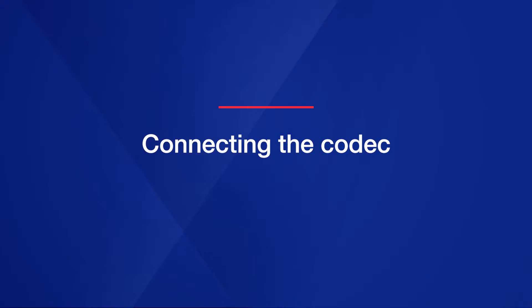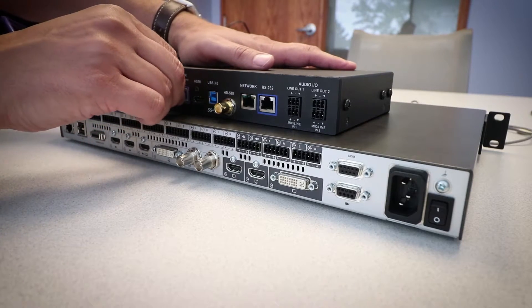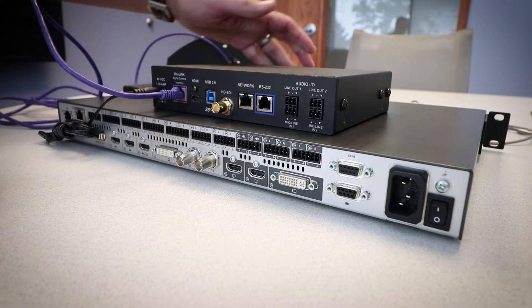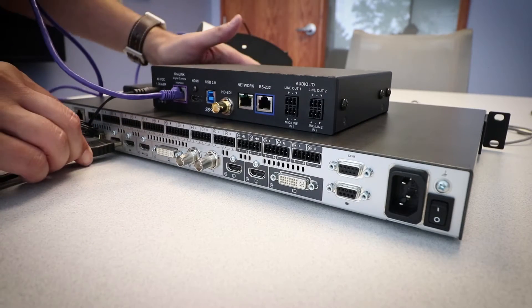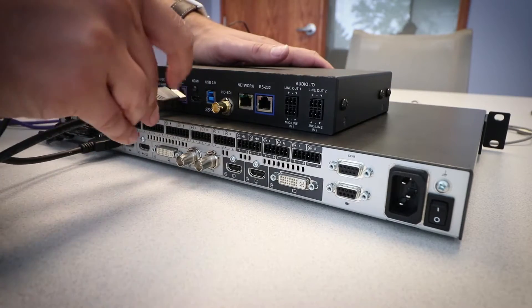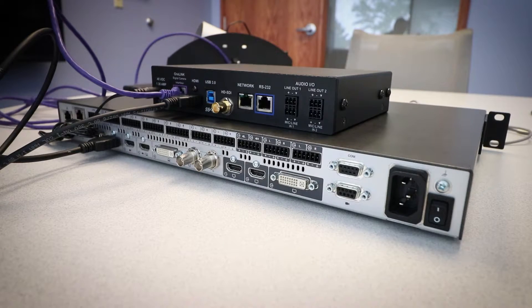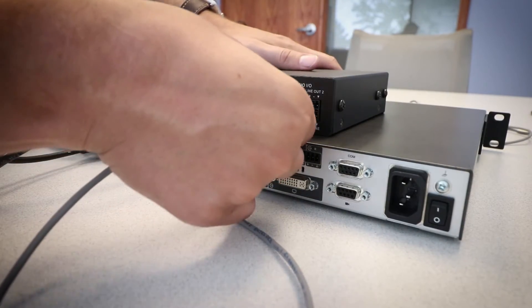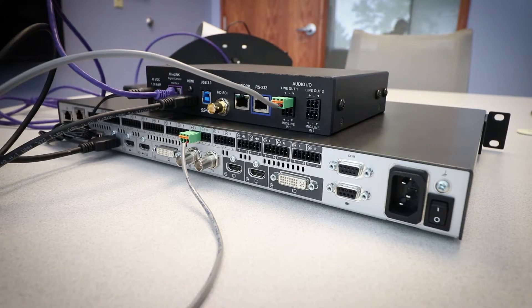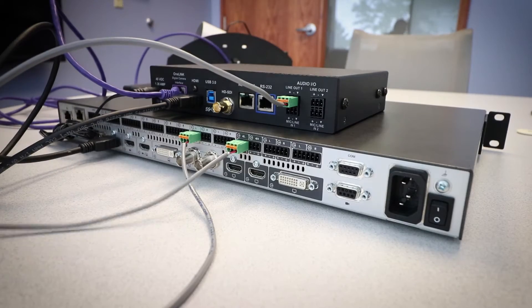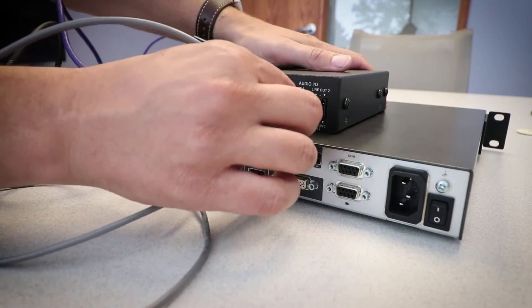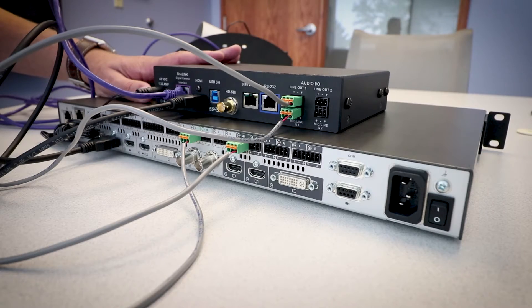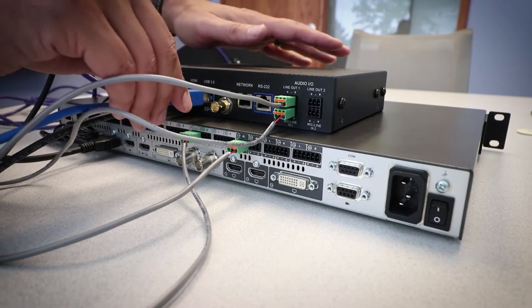And now to connect the camera to the codec: take the category cable we connected to the EZ interface module and connect it to the bridge, connect power to the one link bridge, HDMI to bring video and audio from the camera to the codec, and an audio cable to bring audio from the bridge to the codec and back again. Remember to only have one device perform acoustic echo canceling, or AEC. And finally, connect USB to the one link bridge.